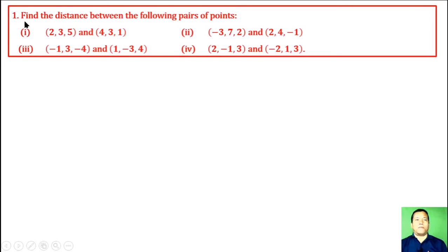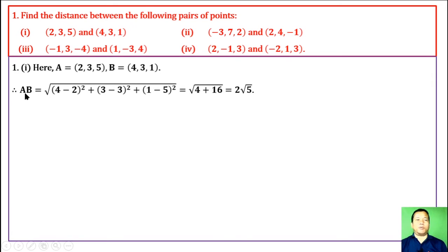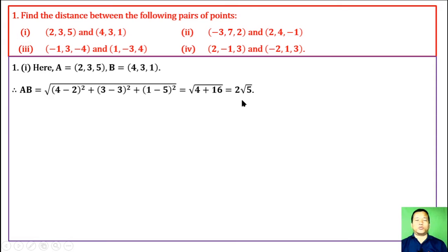Question 1: Find the distance between the following pairs of points. For the first pair, A and B, distance AB = √[(4−2)² + (3−3)² + (1−5)²] = √[4 + 0 + 16] = √20 = 2√5.